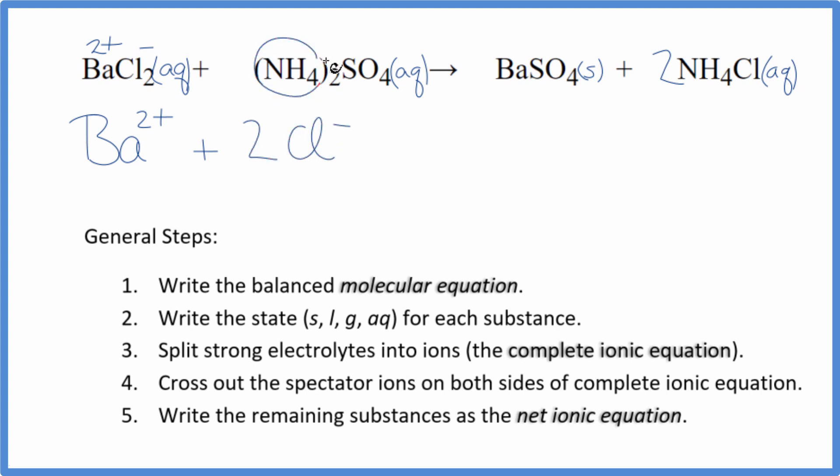Then the ammonium ion - the whole thing is one-plus and the whole sulfate ion is two-minus. Those are two good ones to remember. So I have two ammonium ions, NH4+, and then I have the sulfate ion here, SO42-. These are the reactants in our net ionic equation.